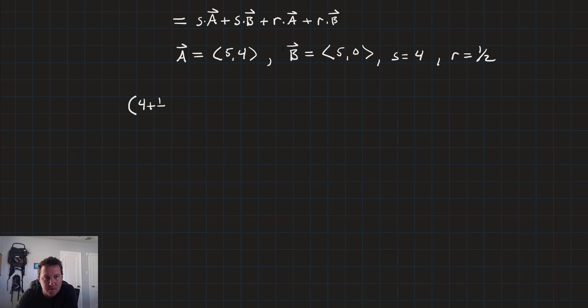So 4 plus 1 half times the vector with 5 and 4 plus the vector with 5 and 0. So that will equal 4 times 5 and 4 plus 4 times 5 and 0 plus 1 half times 5 and 4 plus 1 half times 5 and 0.